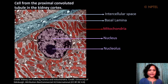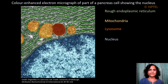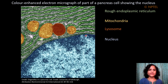In addition, you can see several other heterochromatin regions as well as lightly staining euchromatin regions. The mitochondria are shown in red and are quite numerous. The basal membrane and intercellular space can also be seen between the two cells. Shown here is a color-enhanced electron micrograph of part of a pancreas cell showing an enlarged view of the nucleus.